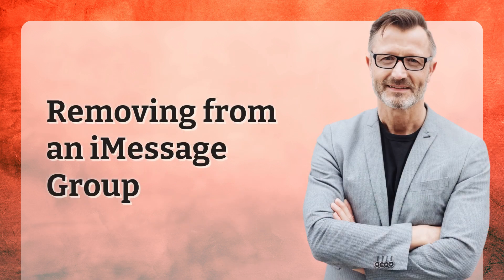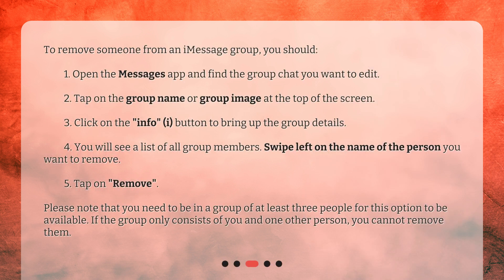To remove someone from an iMessage group: 1. Open the Messages app and find the group chat you want to edit. 2. Tap on the group name or group image at the top of the screen. 3. Click on the Info button to bring up the group details. 4. You will see a list of all group members — swipe left on the name of the person you want to remove. 5. Tap Remove. Please note that you need to be in a group of at least 3 people for this option to be available. If the group only consists of you and one other person, you cannot remove them.